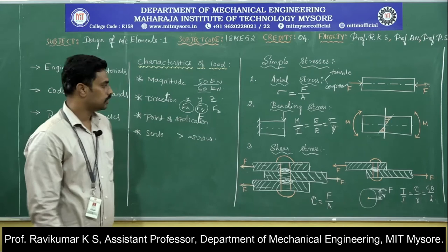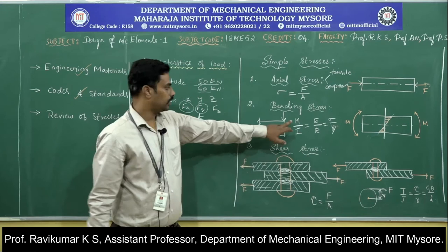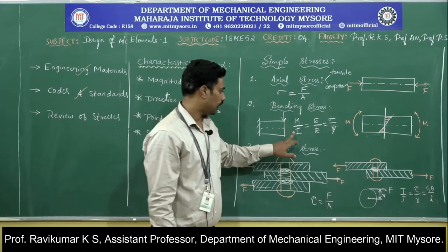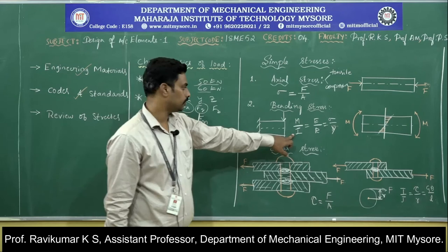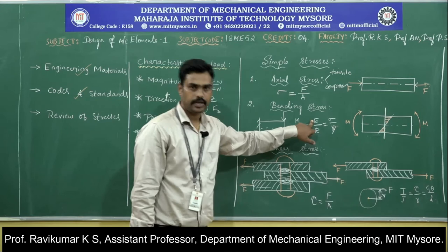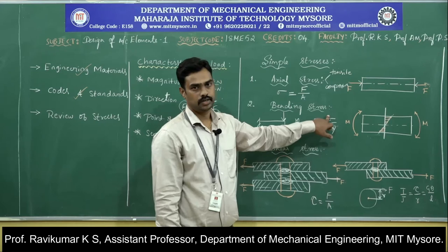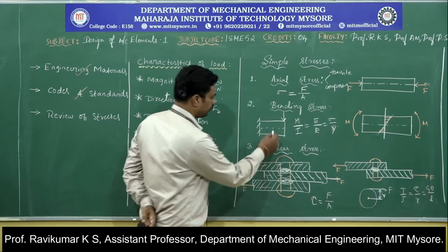This is the review of the stresses. In the bending equation, M is the bending moment (Newton·mm), I is the moment of inertia (mm⁴), E is Young's modulus (N/mm²), R is the radius of curvature (mm), σ is the bending stress (N/mm²), and Y is the distance from the neutral axis to the outermost fiber — inner or outer.